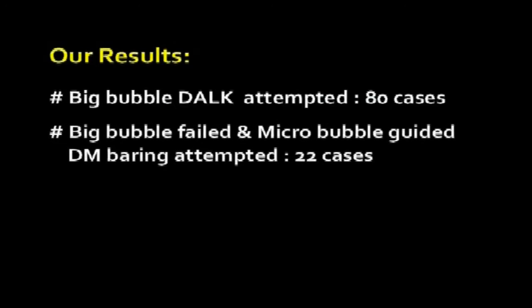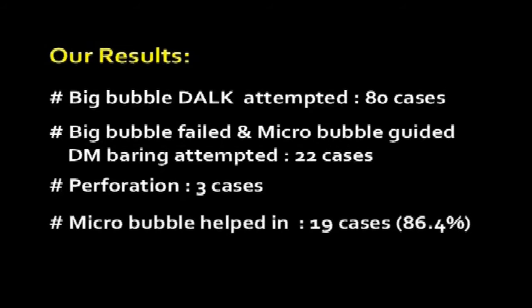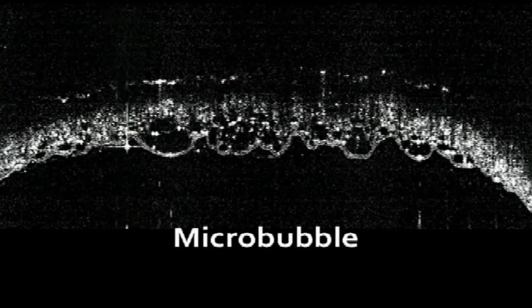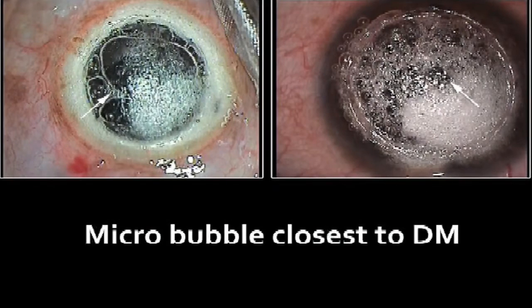A retrospective analysis of our 80 DALK cases showed that the microbubble technique was used in 22 cases where the big bubble technique had initially failed. Three cases with the microbubble technique ended in perforation. The microbubble technique helped in successful completion of the procedure in 19 cases. Identification of the microbubble closest to the Descemet membrane is of paramount importance when the big bubble is not achieved, and this technique can help preserve the most vital layer of the cornea.